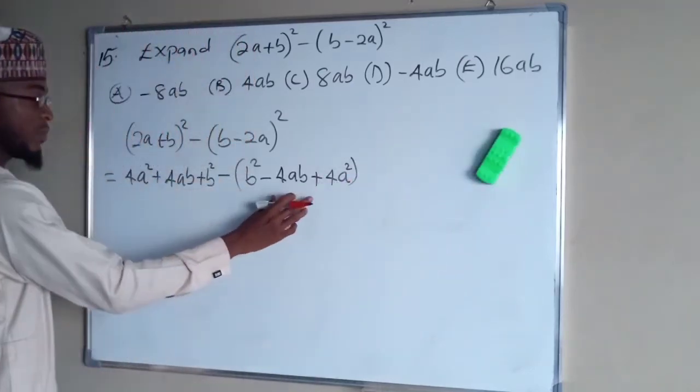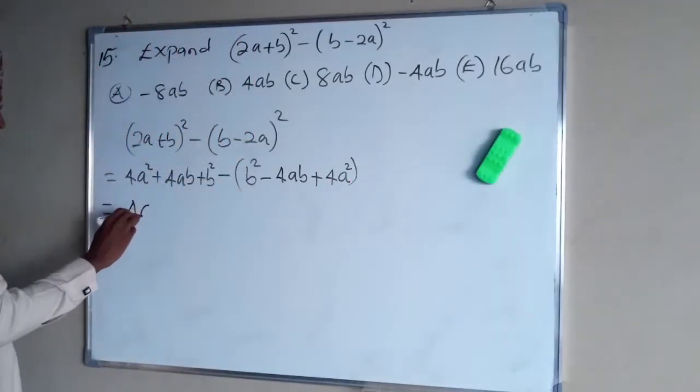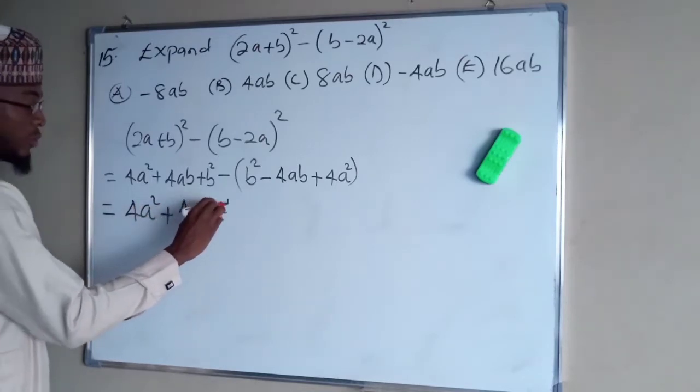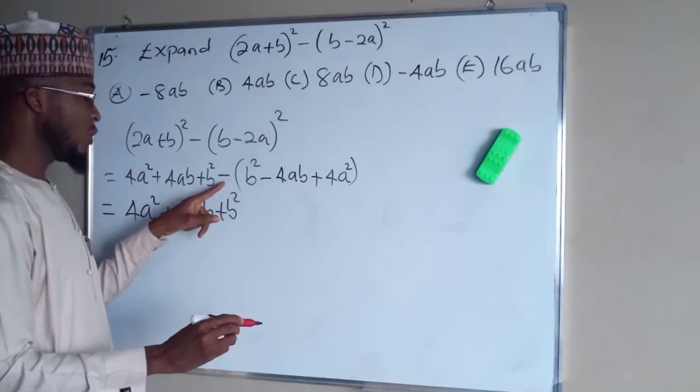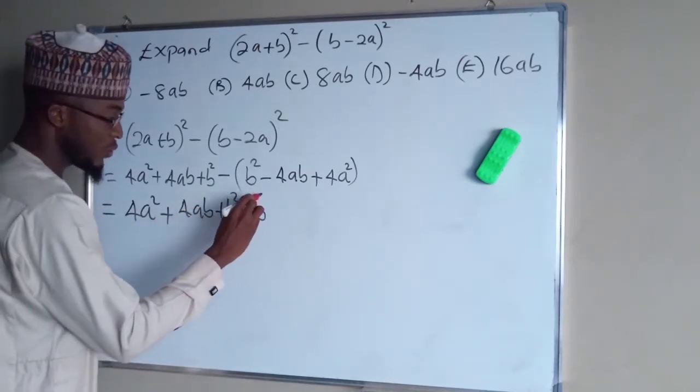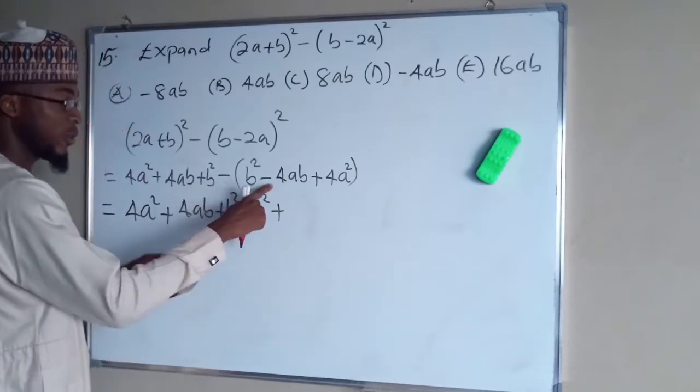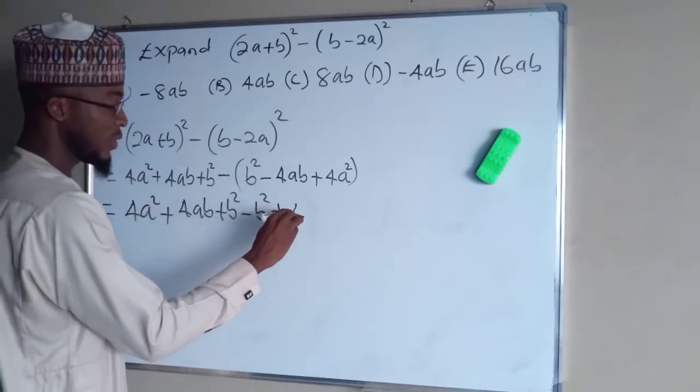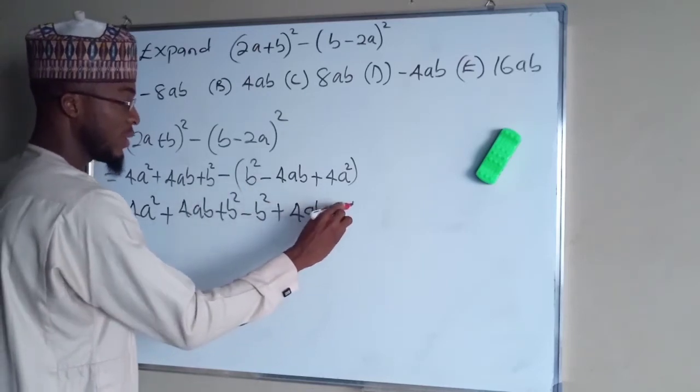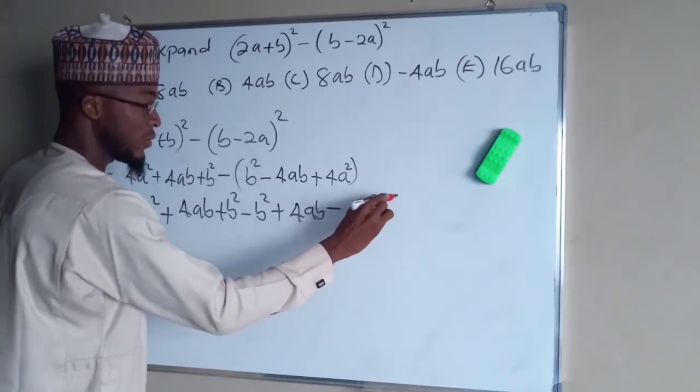So now we expand this bracket in the final: 4a squared plus 4ab plus b squared. This minus is going to affect each one of these terms: minus b squared. Then here plus because minus times minus is plus 4ab. This will turn this one to negative sign, 4a squared.